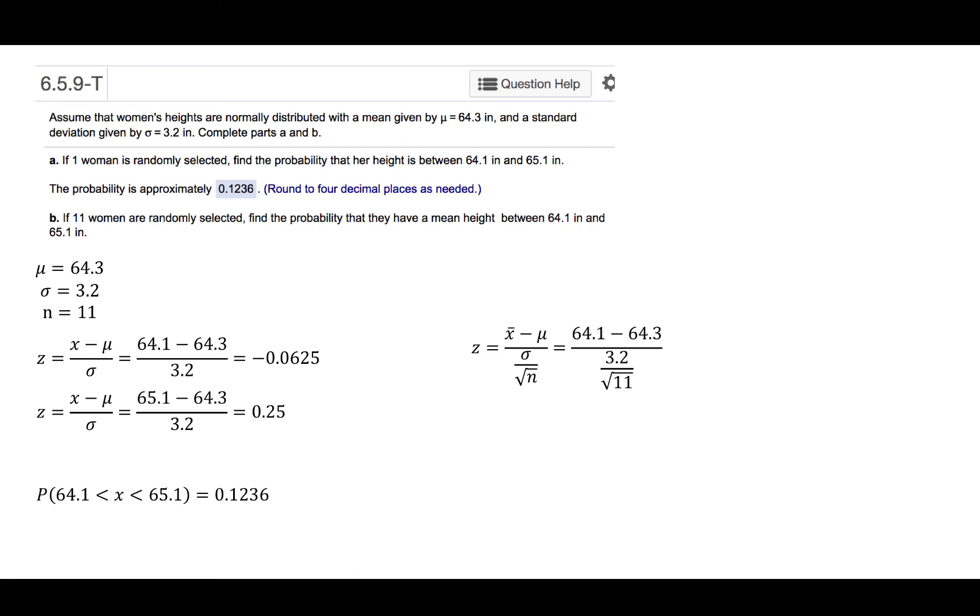So performing these calculations, we'll begin with 64.1 minus the mean, 64.3, divided by the standard deviation, 3.2, divided by the square root of the sample size. And we get a z-score of minus 0.2073.